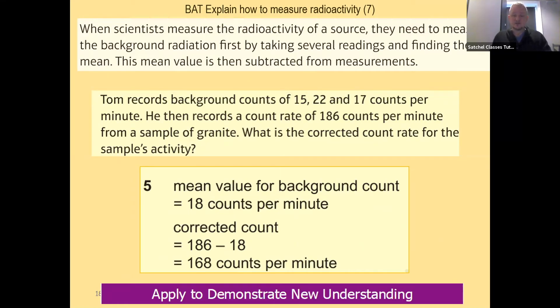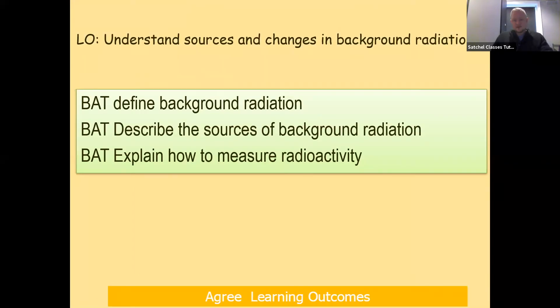Then we would find the corrected count rate, which is 186 minus 18, which tells us that the sample has a radioactive count rate of 168 counts per minute. And that is how to explain measuring radioactivity.